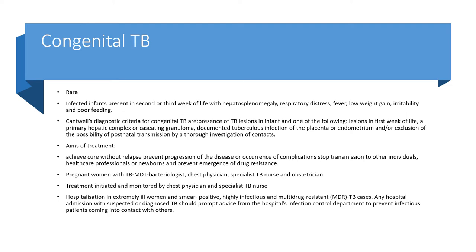Congenital TB is rare. Infected infants present in the second or third week of life with hepatosplenomegaly, respiratory distress, fever, low weight gain, irritability, and poor feeding. Cantwell's diagnostic criteria for congenital TB require the presence of TB lesions in the infant and one of the following: lesions in the first week of life, a primary hepatic complex or caseating granuloma, documented TB infection of the placenta or endometrium, or exclusion of postnatal transmission. Aims of treatment are to achieve cure without relapse, prevent disease progression, stop transmission to other individuals and newborns, and prevent drug resistance.